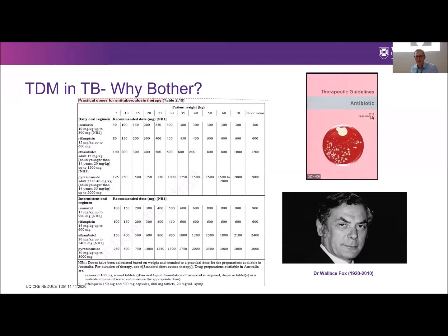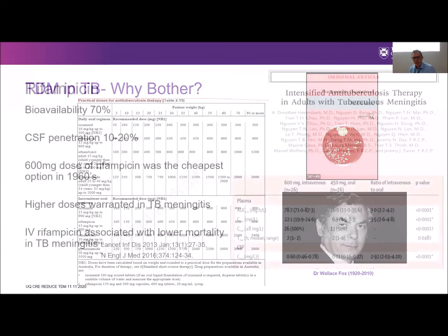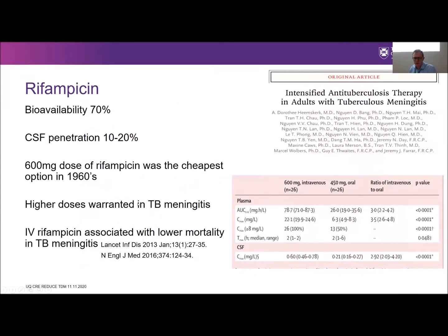In Australia, we use WHO dosing from our national therapeutic guidelines. These doses were really developed in the 1950s, 60s, and 70s by Wallace Fox, who led the British Medical Research Council studies in Hong Kong and Southern India — before PKPD was really thought about. For rifampicin, the 600 milligram dose was really the cheapest dose they thought they could get away with, as it was very expensive. The average weight of patients in Southern India was about 52 kilograms, so malnutrition was prevalent, and we're now probably treating people with much higher body weights.